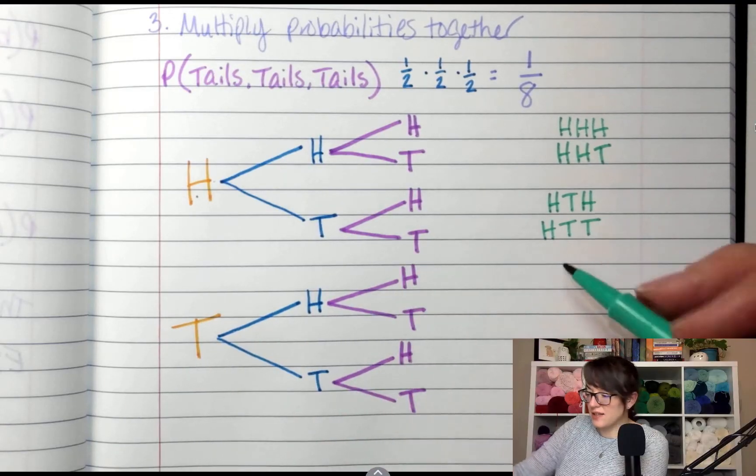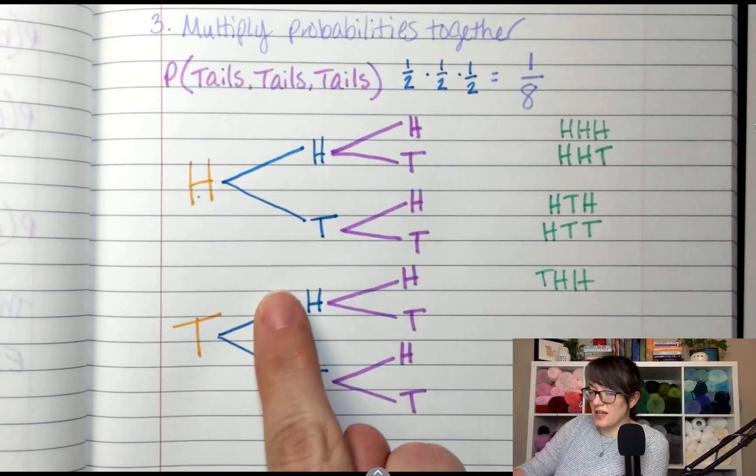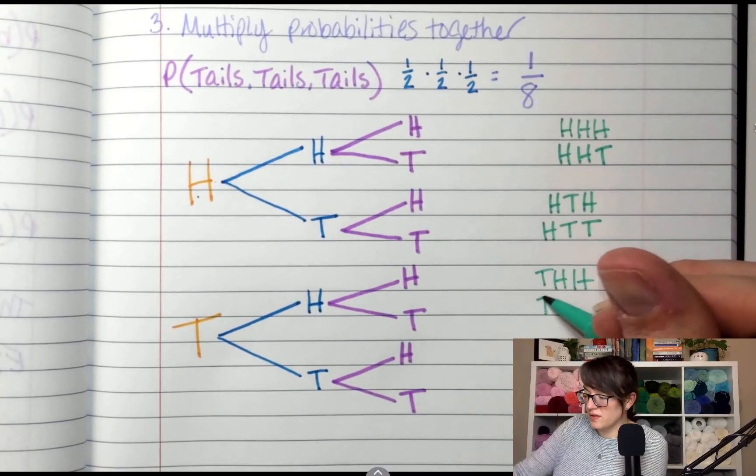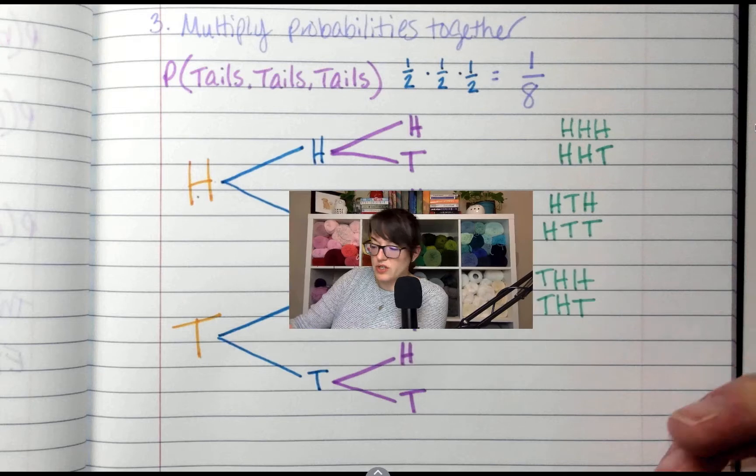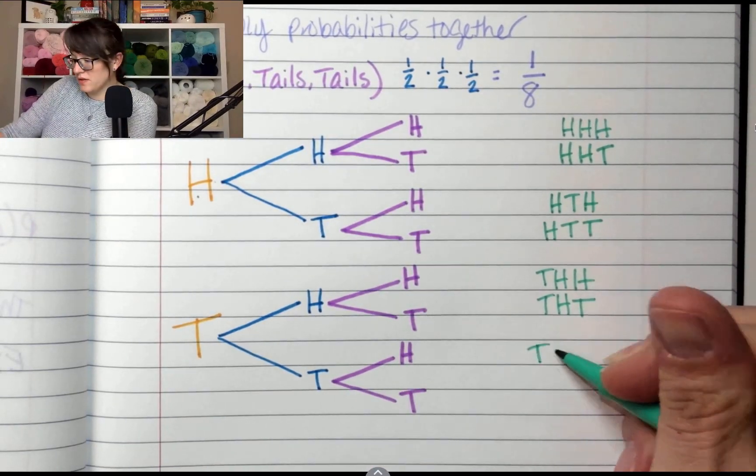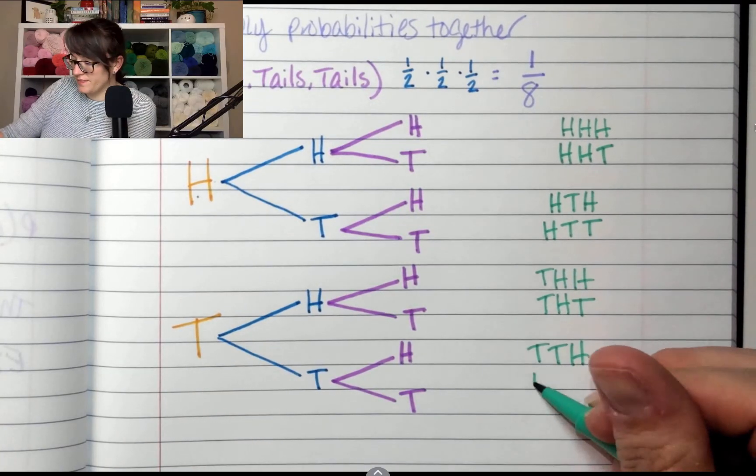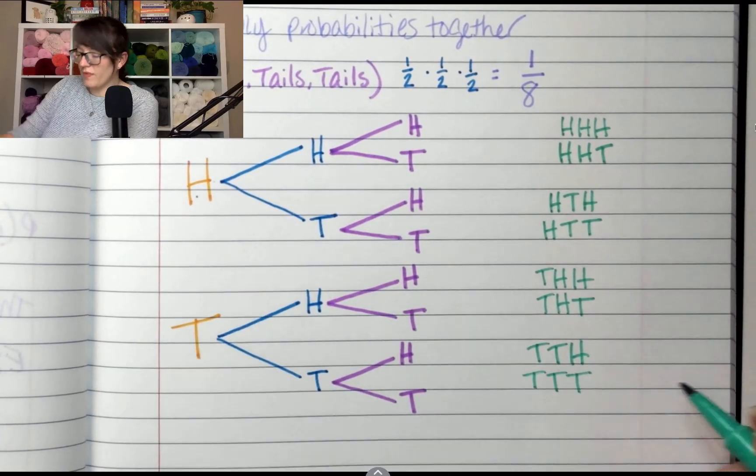Tails, heads, heads. Tails, heads, tails. We are making a list of all the possible combinations. Tails, tails, heads, or tails, tails, tails.